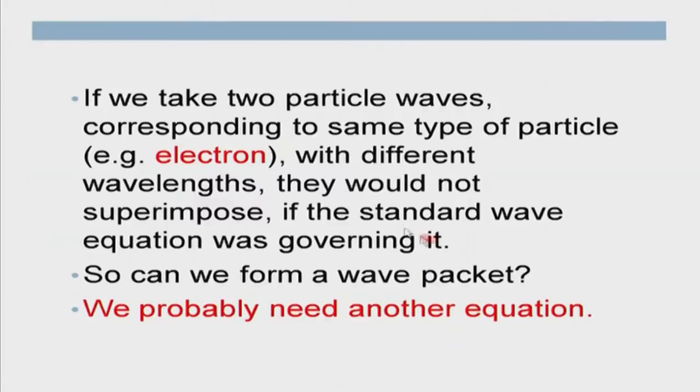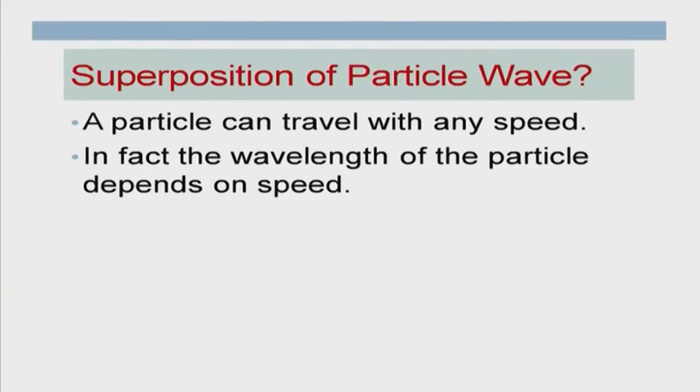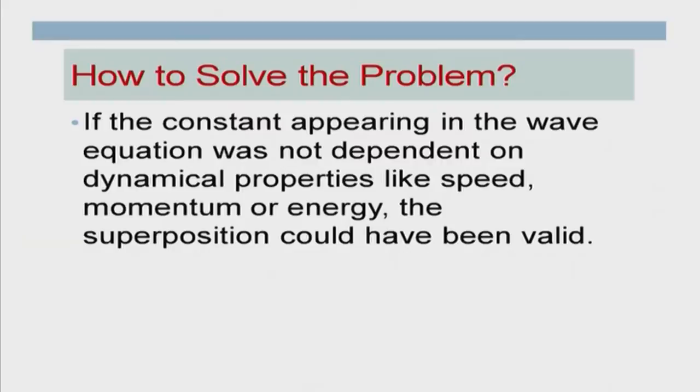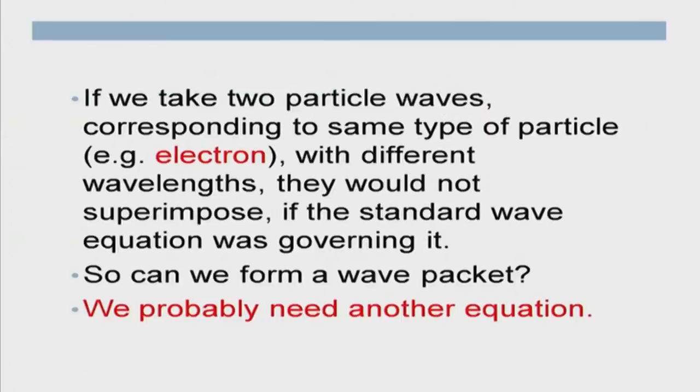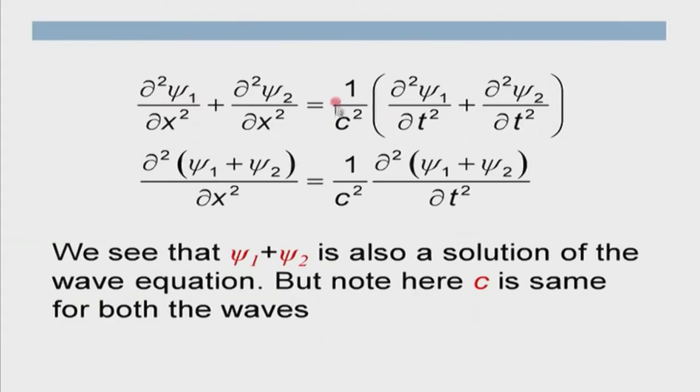If they have been traveling with different speeds, it will not be possible to have the superposition principle valid. Superposition is inherent — it has to be built in — because otherwise no interference is possible, no diffraction is possible, no wave packet formation is possible. So we do need an equation where it is possible to superimpose different waves. The basic reason we were not able to get superposition is this constant which depends on the speed of the particle.